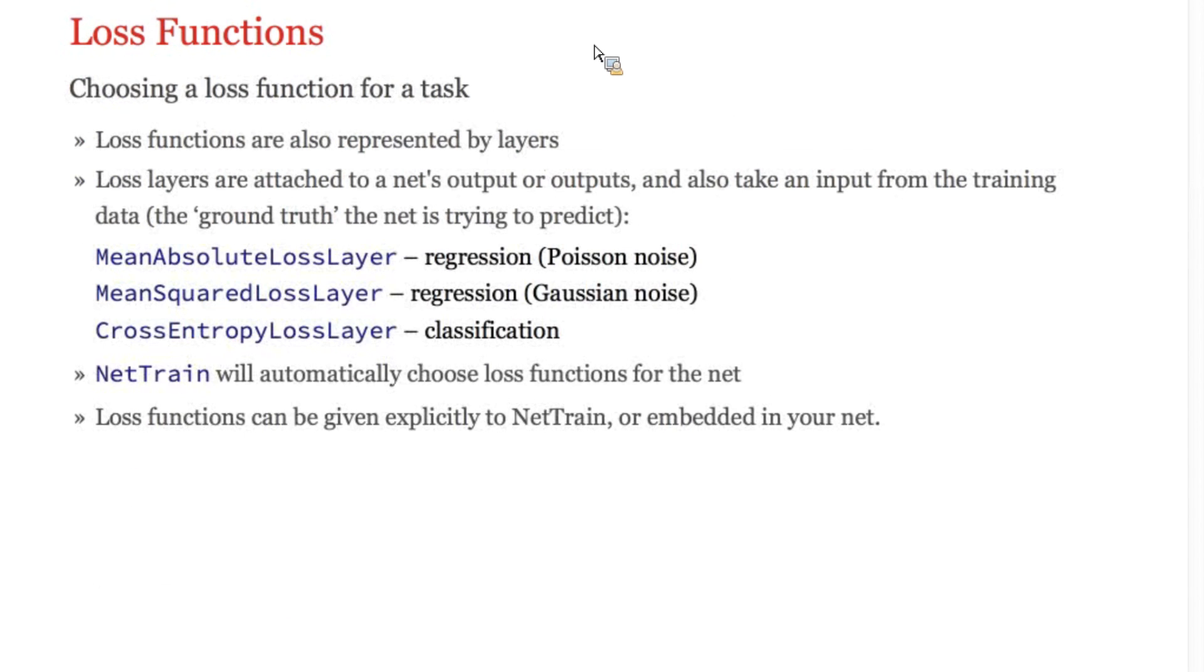Loss functions are layers like any other layer. Unlike most layers, though, they take two inputs, one from the net and one from the training data, and they produce a scalar value, the loss. The right loss to use depends on the application, but luckily NetTrain will pick a loss function for you based on the output of the net. You can still specify a loss using the third argument of NetTrain or by embedding your loss directly in your network.